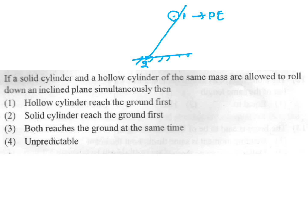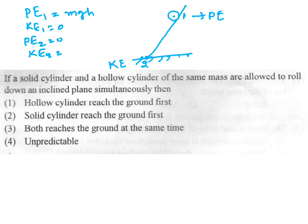At position 2, potential energy is zero and kinetic energy is (1/2)mv². Since potential energy converts to kinetic energy: mgh = (1/2)mv², therefore v = √(2gh). The velocity depends only on h.